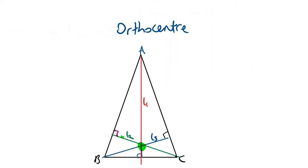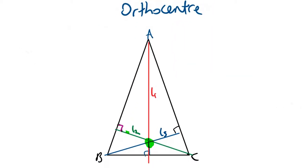The last concurrency we look at is the orthocentre. We know it's going to be the point of intersection of the three altitudes. Think of an altitude: imagine getting a triangle and standing it vertically from the ground. If you swing a pendulum from vertex A and it hits the ground vertically, that is an altitude. If you turn the triangle around and do the same thing from C, that's another altitude. So we know this point can be found from the intersection of L1, L2, or L3.